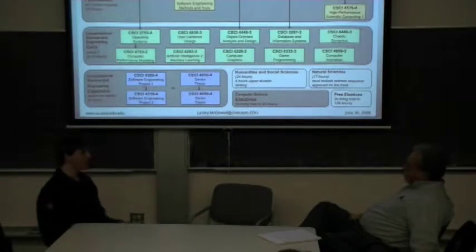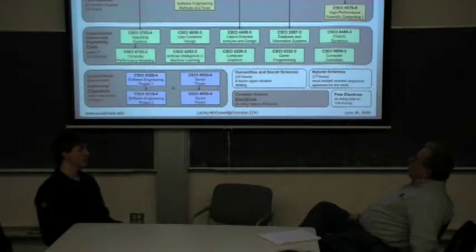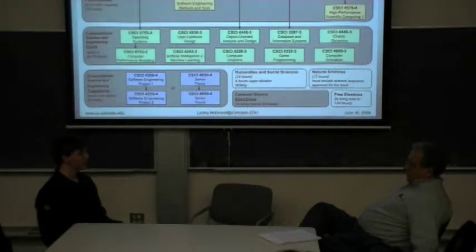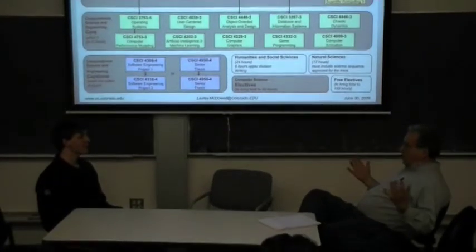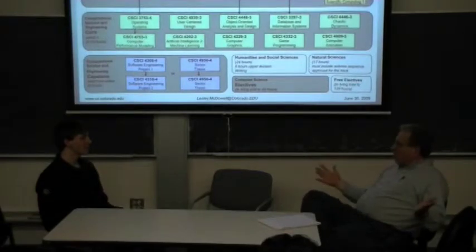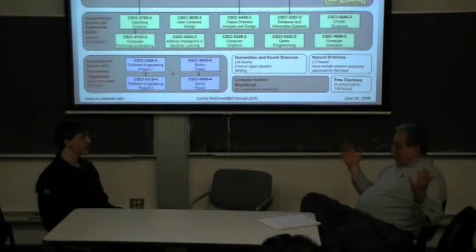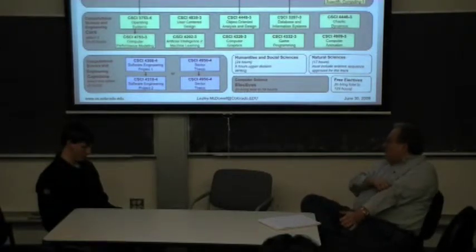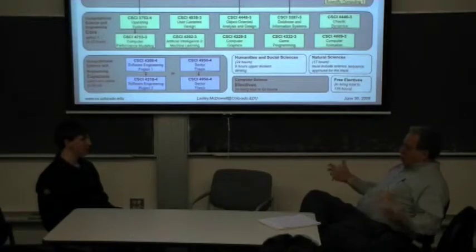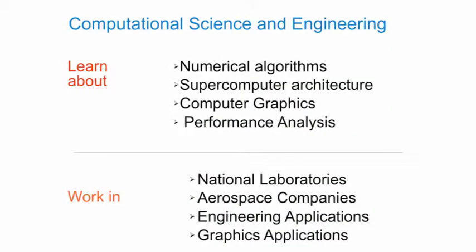What would you say are some of the interesting current research topics in this field? One of the most interesting ones right now is machine learning. People used to think that machine learning was about coming up with a verbal description of the world and manipulating that. Now we're seeing it's really all about interconnections and neural weights, and that's how we translate things now. I find that very interesting.